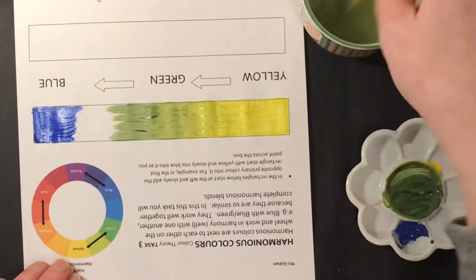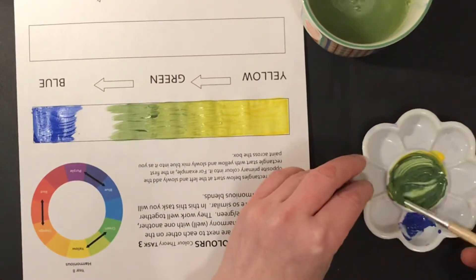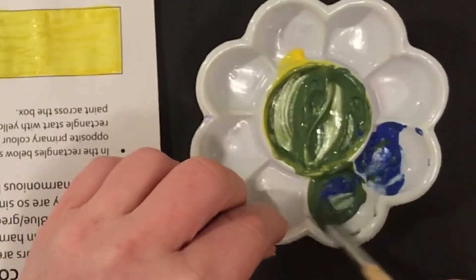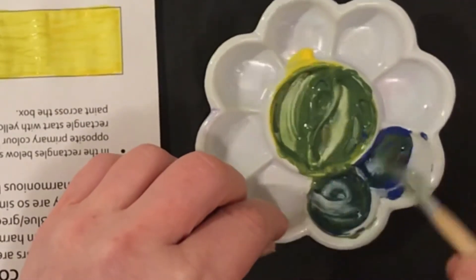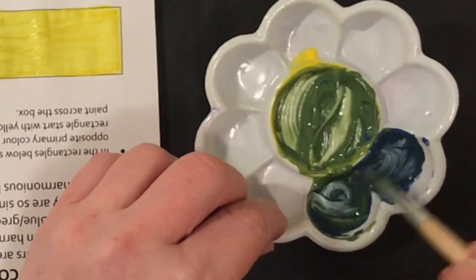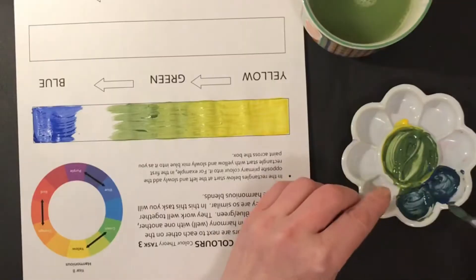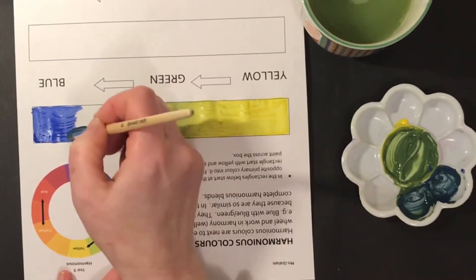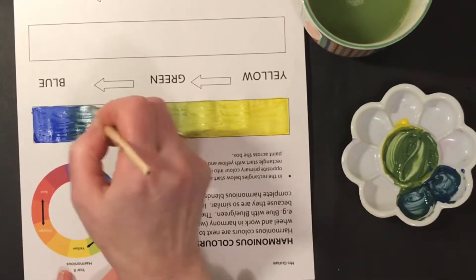Now I want a blue-green, so I'm going to take the blue and green and mix them together and work my way back to the green.